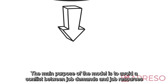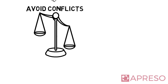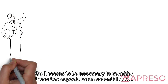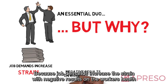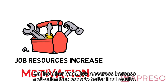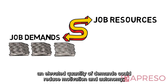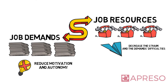The main purpose of the model is to avoid a conflict between job demands and job resources that could provoke a strong imbalance. This imbalance could lead to serious health and personal problems, so it is necessary to consider these two aspects as an essential duo. Job demands increase strain with negative results on workers' health and, in some cases, workers could develop burnout syndrome. On the other hand, job resources increase motivation, leading to better final results. We could say that job demands and job resources influence each other: an elevated quantity of demands could reduce motivation and autonomy, while elevated resources could decrease strain and demand difficulties.